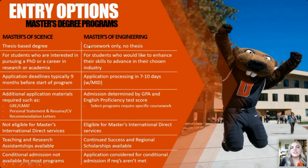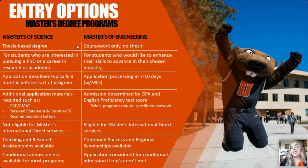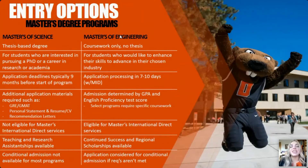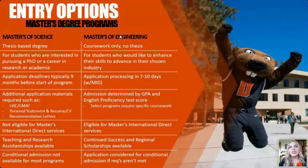Both degree programs have the same coursework, but the master's of engineering has no thesis, so it can actually be completed faster. The master's of science is typically a full two years or longer, depending on how long it takes to complete your thesis and research. The master's of engineering can typically be completed in a little less than two years, and it's very streamlined for students who want to enhance their skills to get a great job in the industry of their choice.